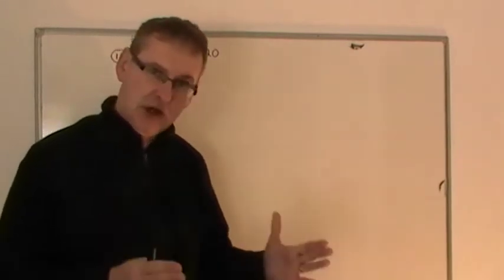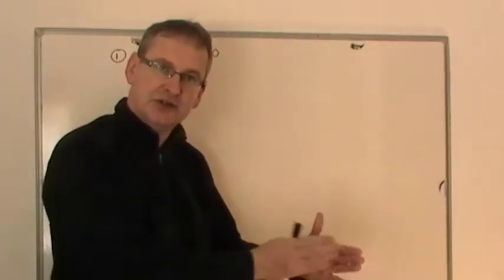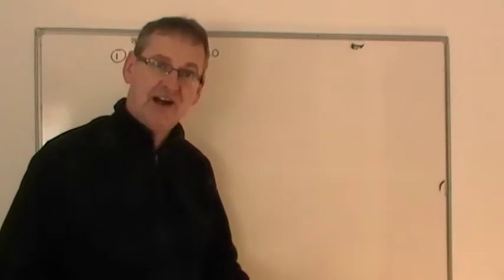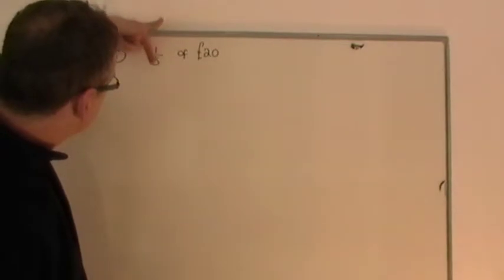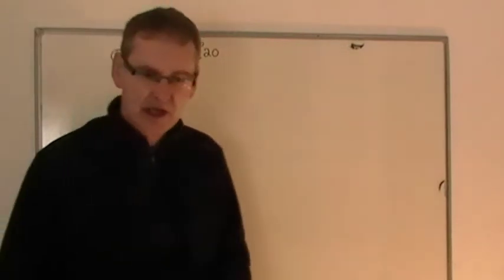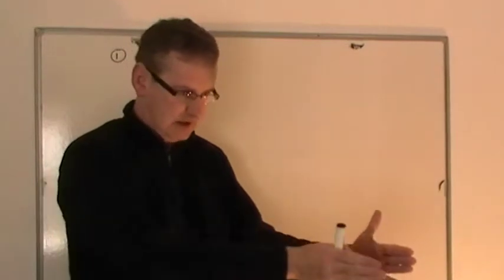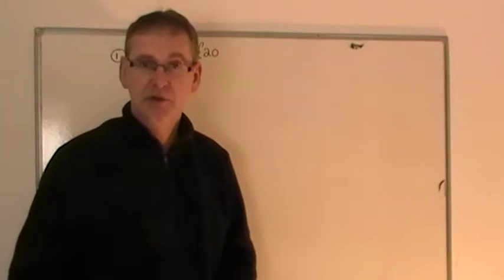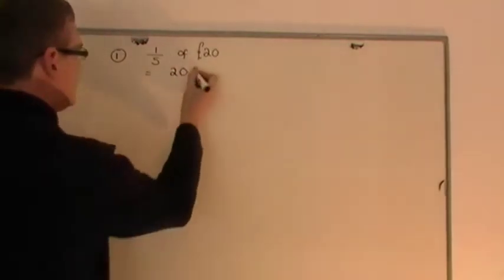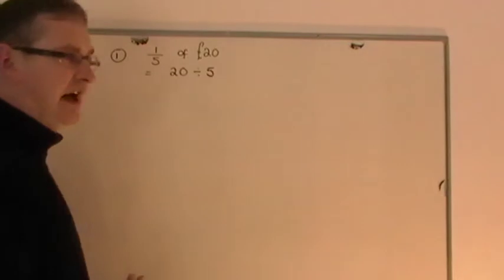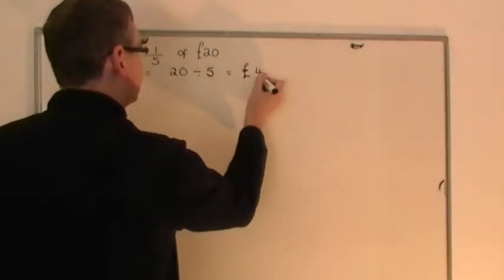If you're working out one-fifth of something, you take a quantity — imagine a block of wood — and for one-fifth of it, you just chop it into five equal portions. So you take the one block of wood and share it into five equal portions. That's what the fraction tells you. So if I had 20 pounds, imagine I take 20 pounds and put it in a long line. All I've got to do is share it into five equal portions, and I'll have a fifth of 20 pounds in each portion. So you take the 20 and share it into five equal portions. That gives you one-fifth of 20 pounds, which is four pounds.